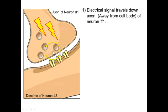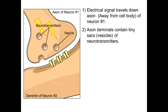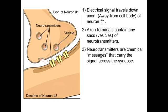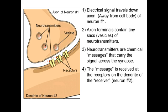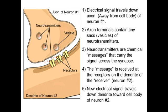The electrical signal causes one of these little bubbles — the vesicles — to release their neurotransmitters. You can think of it as the lightning bolts popping these little bubbles, though that's not exactly what happens. The neurotransmitters are chemical messengers that carry the message across the synapse to the next dendrite or neuron. Once released into the synapse, they travel across and some will land on the receptor molecules of the second neuron, causing a new electrical signal in neuron number two.